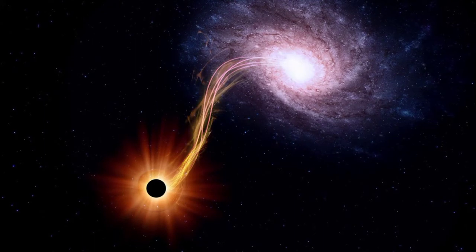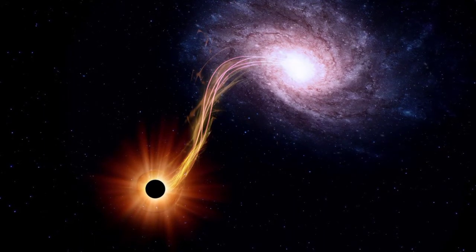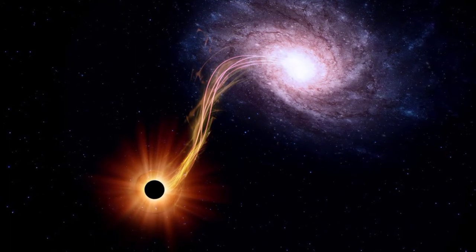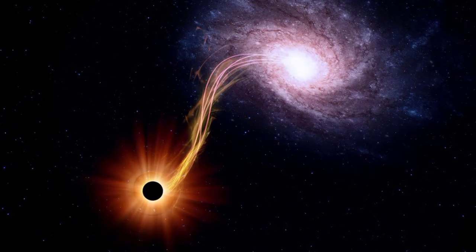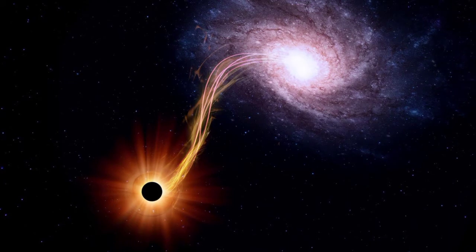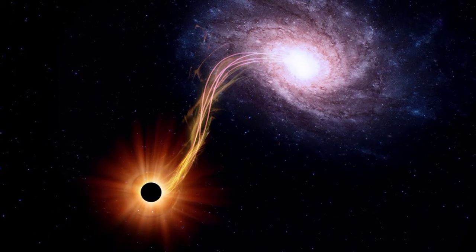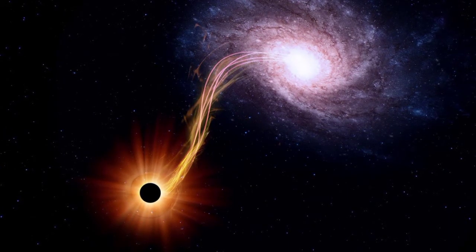A neutron star is the collapsed core of a massive supergiant star which had a total mass of between 10 and 25 solar masses, possibly more if the star was especially metal-rich.